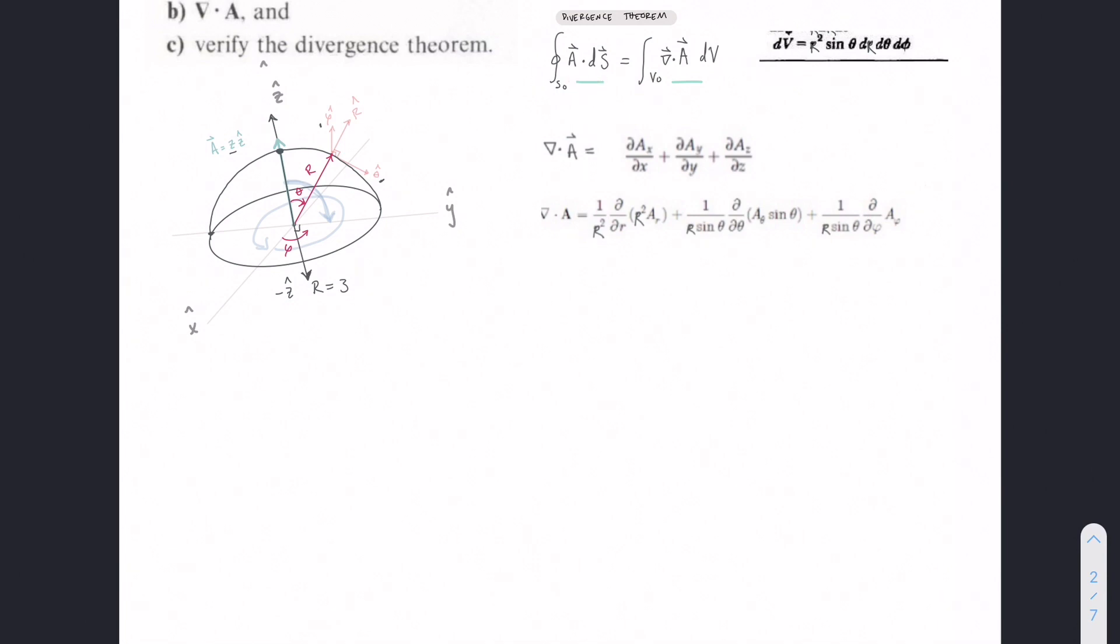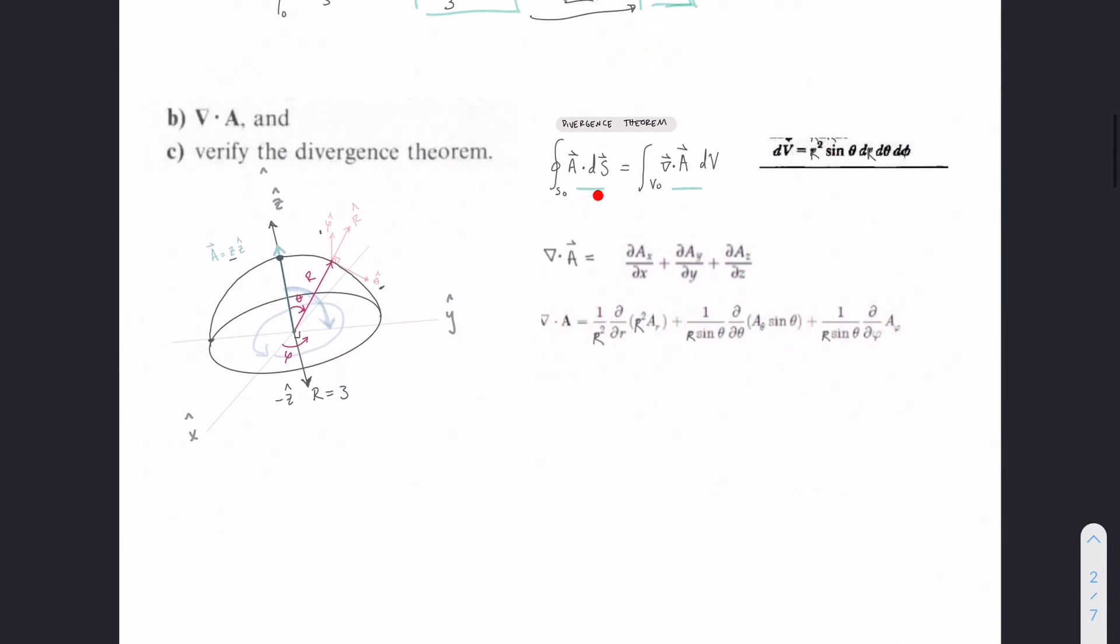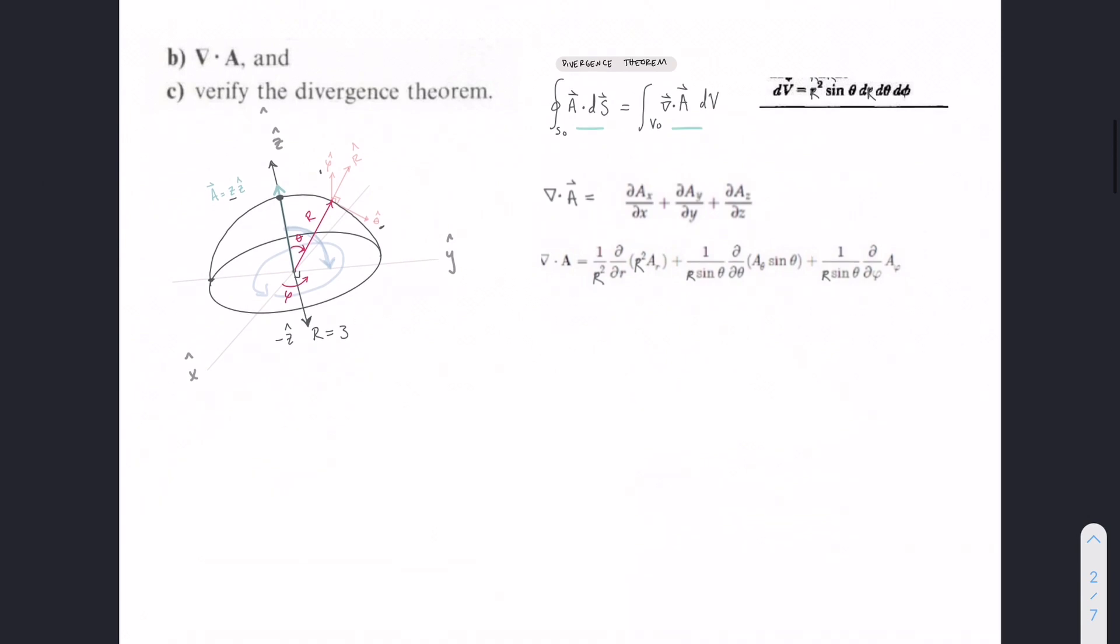So we found the first half, which is 18 pi, from A dot dS, from our two surface pieces, which were this flat circle and then this half sphere. So we found that first left side, and then we're going to have to find the right side.